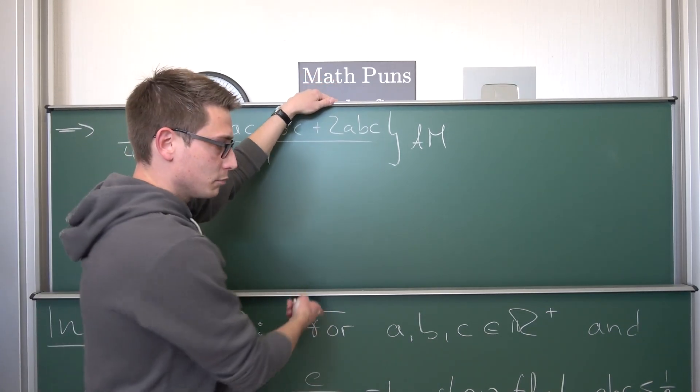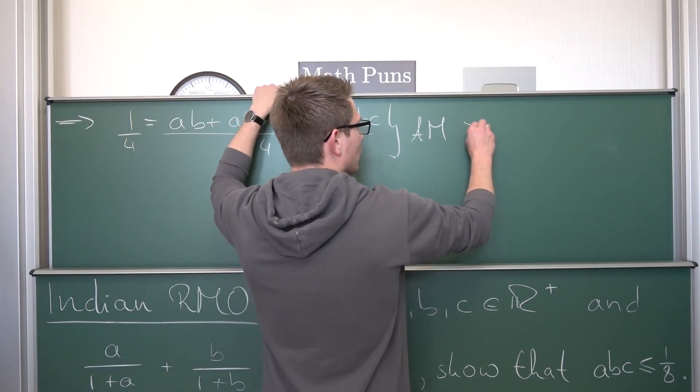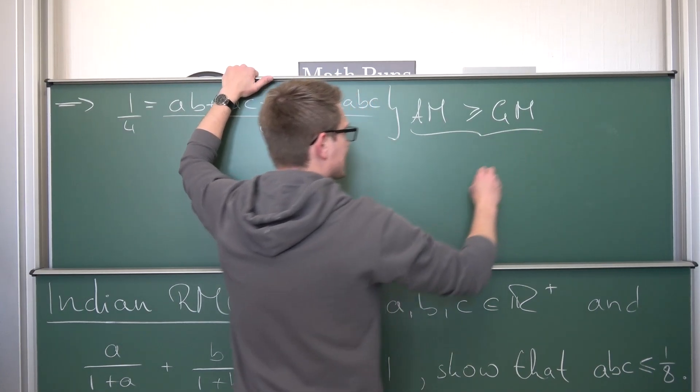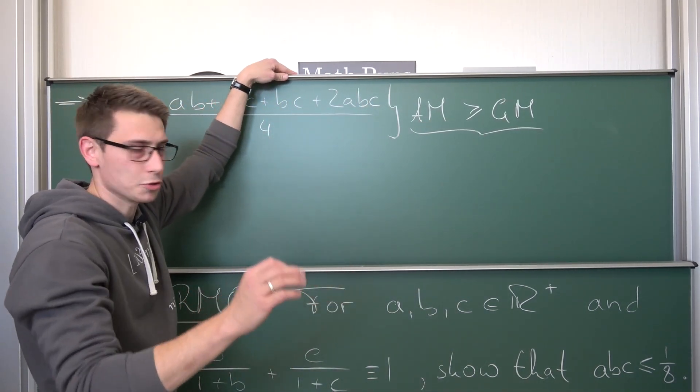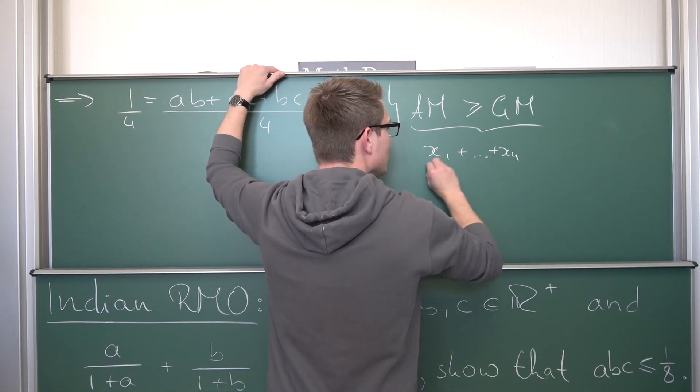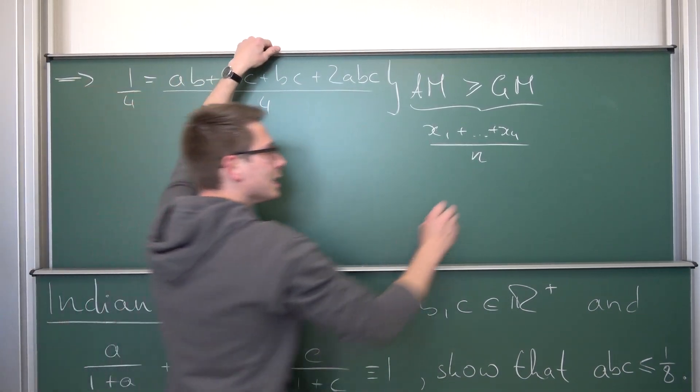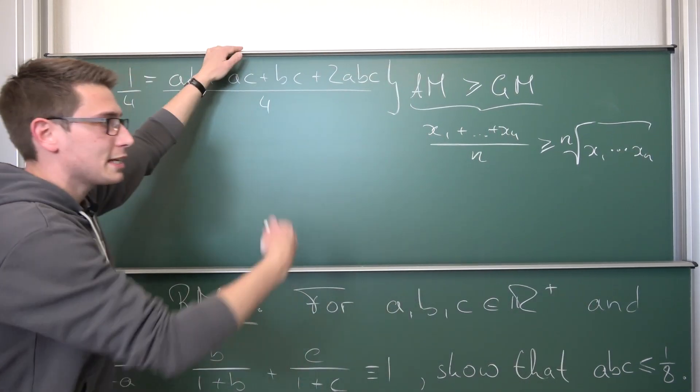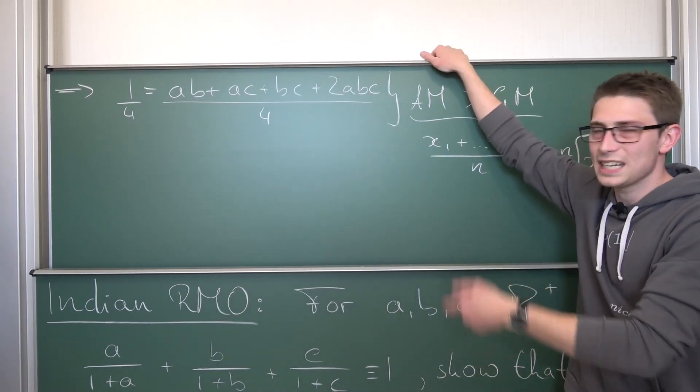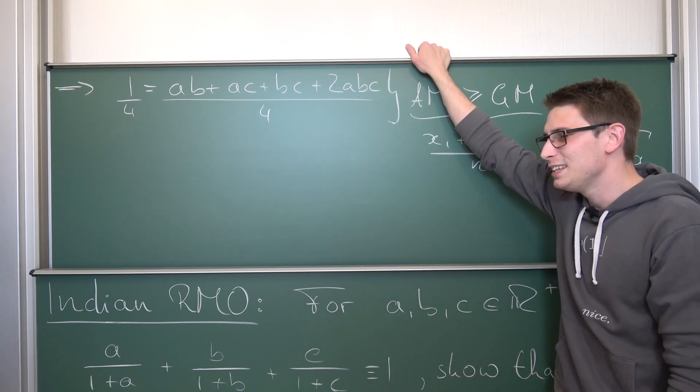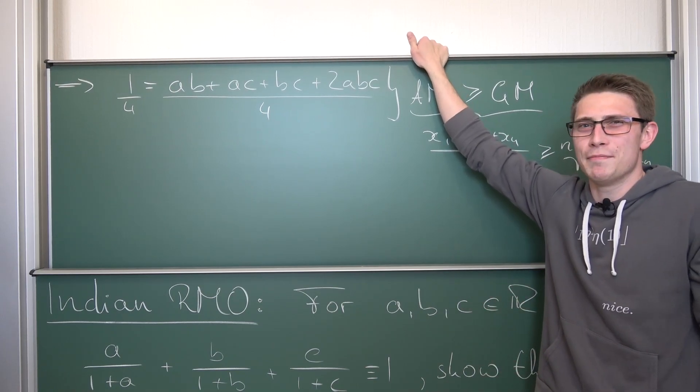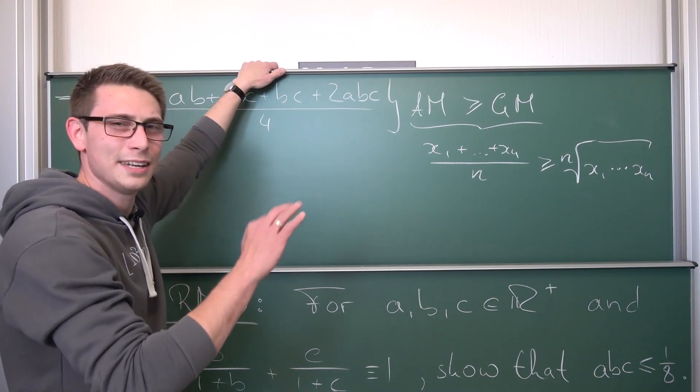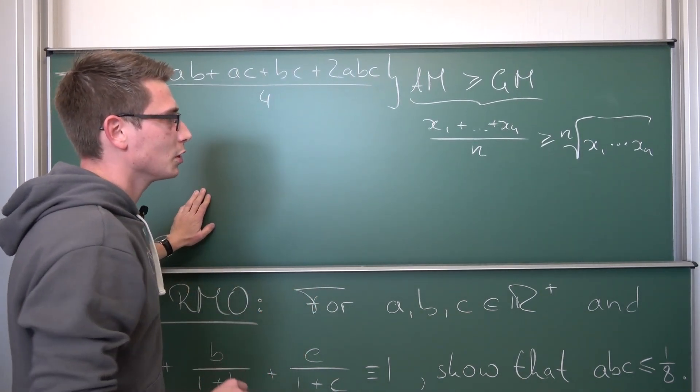And in each and every ordered field, like for example the real numbers or the positive reals, it holds that the arithmetic mean is always greater or equal to the so-called geometric mean. The arithmetic mean is if we have n samples being added together and we divide it by the number of samples, it's greater or equal to the nth root of all the samples multiplied together. This is the AM-GM inequality.